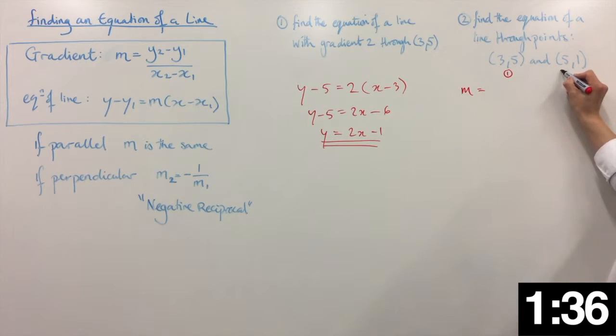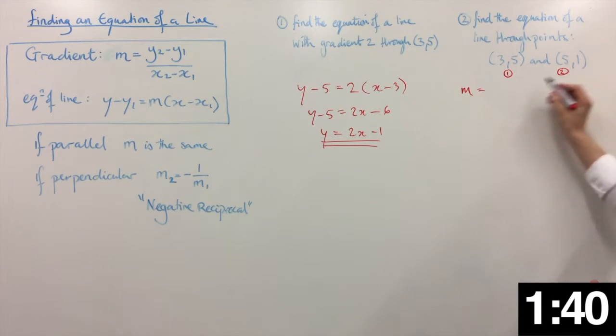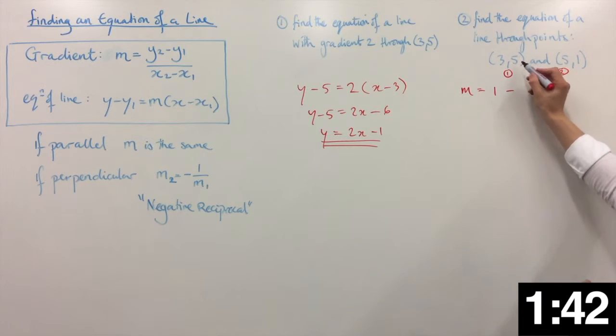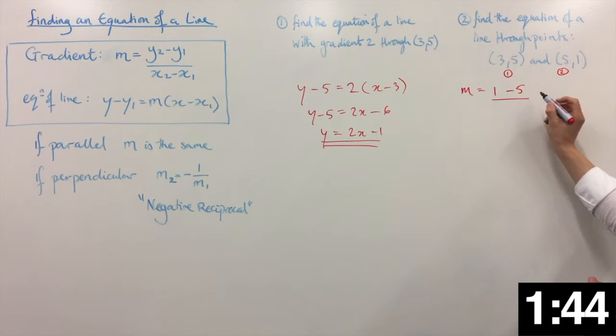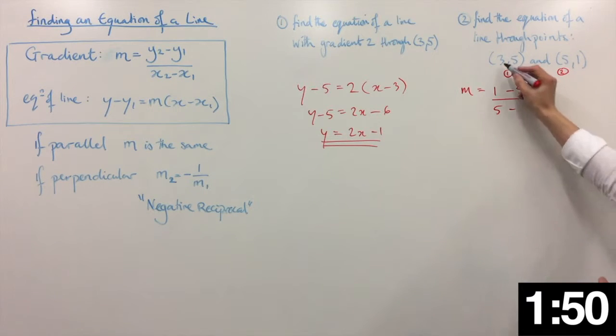Let's take this to be the first and this to be the second point. We need to be consistent on top and bottom. So y2 is 1, y1 would be 5. x2, I've said 2, so make sure I don't go for this. So this is 5 minus 3.